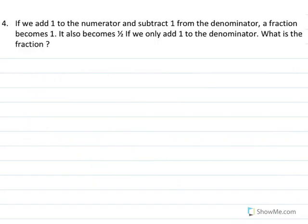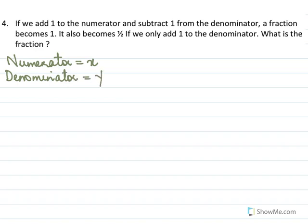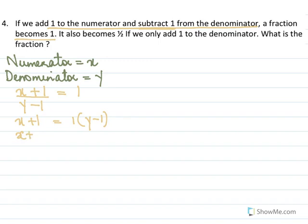For the next sum, let numerator be x and denominator be y. In the first part, if we add 1 to the numerator and subtract 1 from the denominator, the fraction becomes 1. So (x plus 1) over (y minus 1) equal to 1. Cross multiplying: x plus 1 equal to y minus 1, giving x minus y equal to minus 2. This is equation 1.